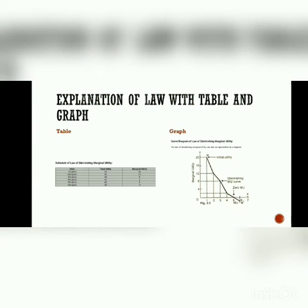Next, explanation of the law with a table and graph. Here we are looking at units. Units are the example of 1st glass, 2nd glass, 3rd glass, 4th glass, 5th glass, 6th glass. This is total utility and marginal utility.